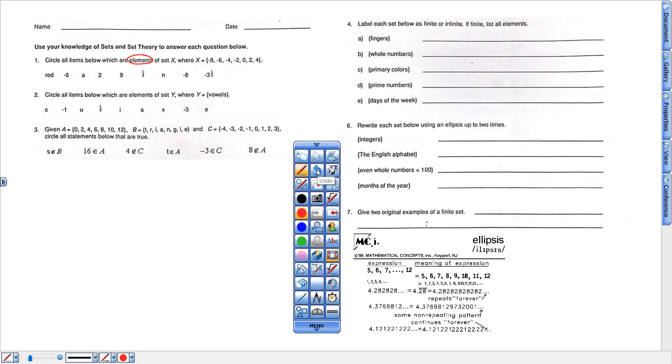That means part of this set of numbers right here. The set is represented by X. All those numbers in there are elements. So what you're doing is looking for which are elements. So that red is not in there. Negative 6 for sure is in that set of numbers. A is not in there. 2 is in there for sure.